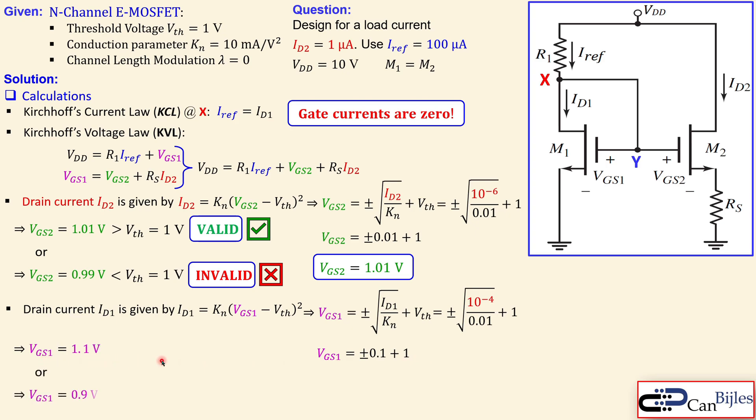That will give us two solutions, 1.1 volts or 0.9 volts. Again, the same reasoning. In order to fulfill the saturation region of operation, we need to have this larger than the threshold voltage.